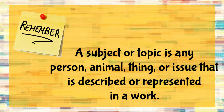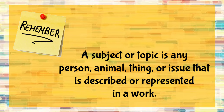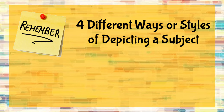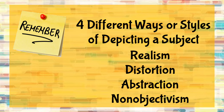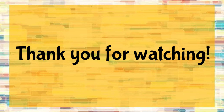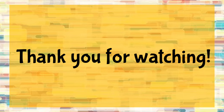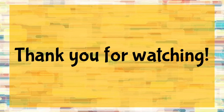Always remember that a subject or topic is any person, animal, thing, or issue that is described or presented in a work. We have four different ways or styles of depicting a subject: realism, distortion, abstraction, and non-objectivism. And that's it for this video. I hope that you learned and had fun at the same time. See you on our next lesson. Bye!